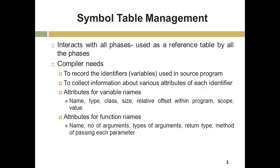One activity is symbol table management, and this is involved with all the six phases of compiler. Another activity is error handler, and that is also related with all the phases of compiler. Symbol table management interacts with all the phases and is used as a reference table by all the phases. The purpose of symbol table management is that the compiler needs to record the identifiers or variables used in the source program. The identifier also includes function names.